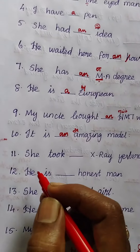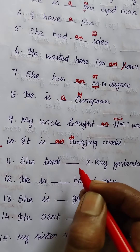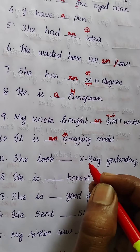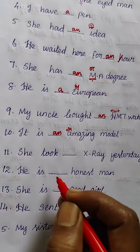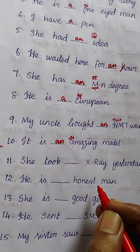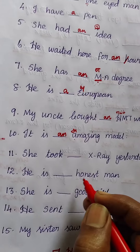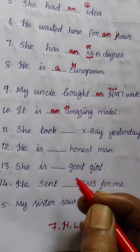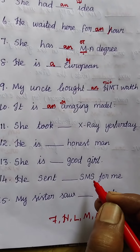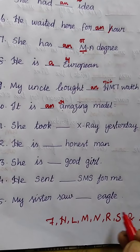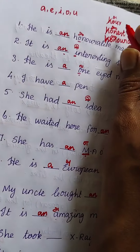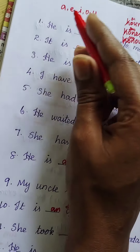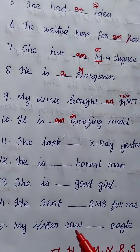Now it is your turn — try the exercises yourself. Fill in the blanks: 'She took ___ X-ray yesterday' — X is a capital letter, find which rule applies. 'He is ___ honest man' — already instructed how to find and pronounce. 'She is ___ good girl.' 'He sent ___ SMS for me' — use the 8 consonant letter rule. Check vowel sounds, check vowel letters, and use all the tips to find the answers.